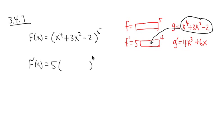So 5 parentheses to the fourth power, and what happens is that the g function here goes inside: x to the fourth power plus 3x squared minus 2. The inside function stays the same for now.